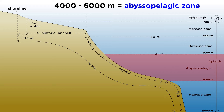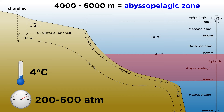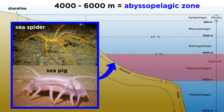Even deeper is the abyssopelagic zone, extending from 4,000 to 6,000 meters. Temperatures in the abyssopelagic zone stay at a chilly 4 degrees Celsius, and pressures reach 200 to 600 times the atmospheric pressure at sea level. Incredibly, there are some organisms that can withstand these conditions. Sea spiders with spindly 30-centimeter-long legs and mud-eating sea pigs scuttle across the bottom of the ocean floor, making an unlikely home.